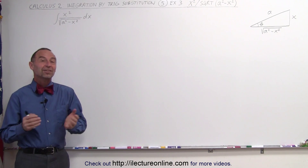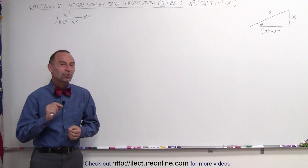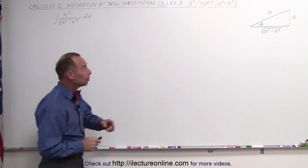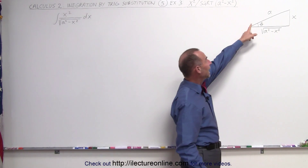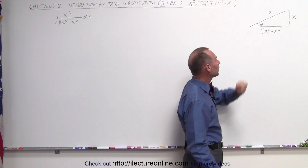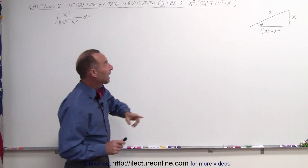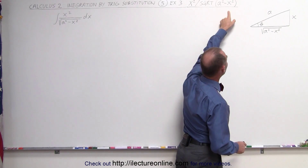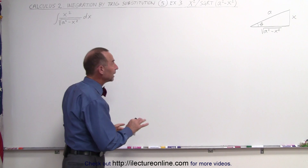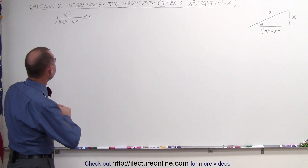Welcome to ElectronLine. Here's our next example of how we're going to solve an integral by using trig substitution. It comes down to the relationship between a, x, and the square root of a squared minus x squared in this particular triangle. We do that because here we have the square root of a squared minus x squared, so that's how we're going to find the relationship between x, a, and the square root of a squared minus x squared.